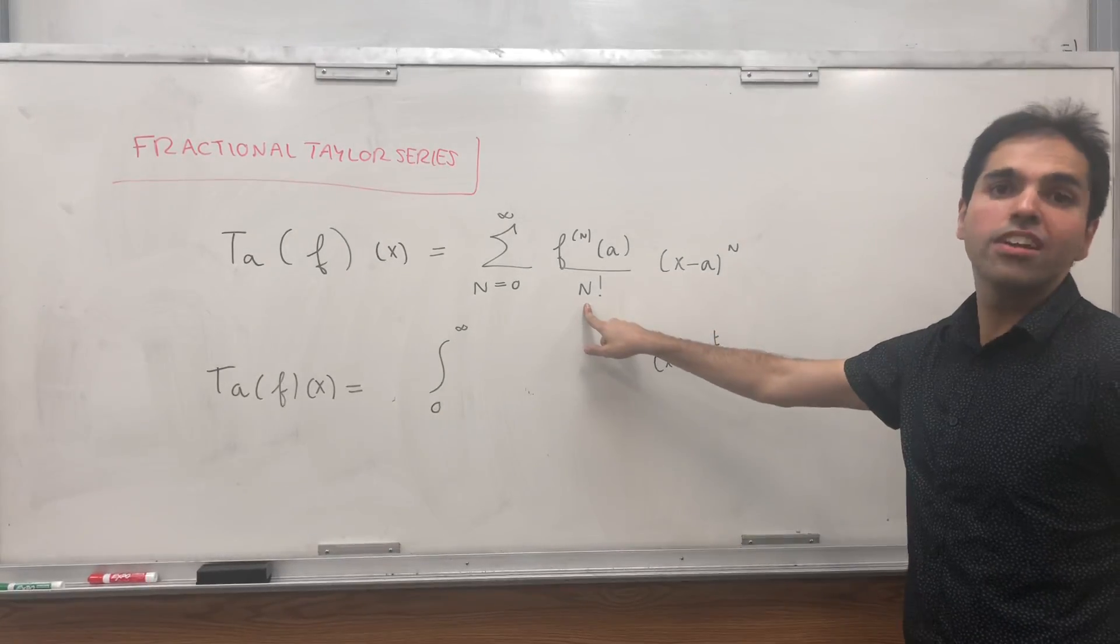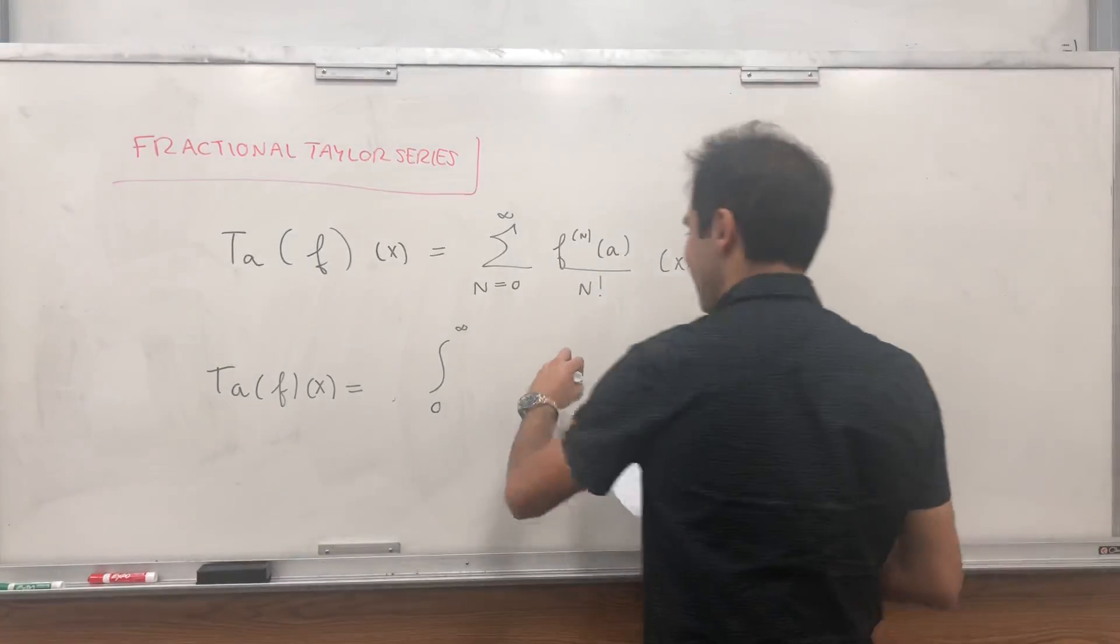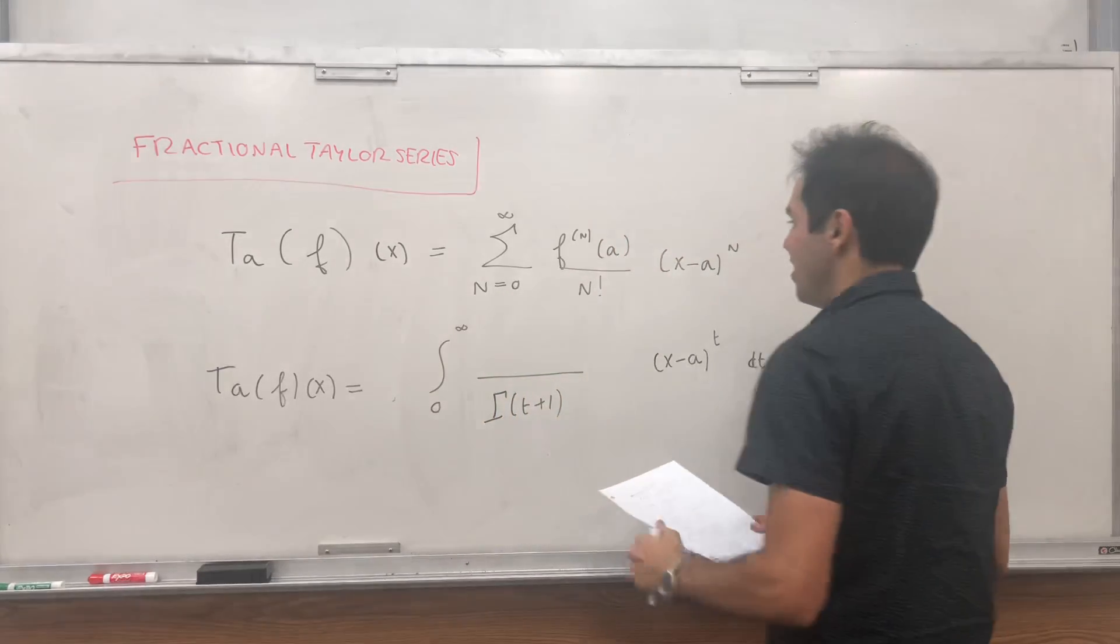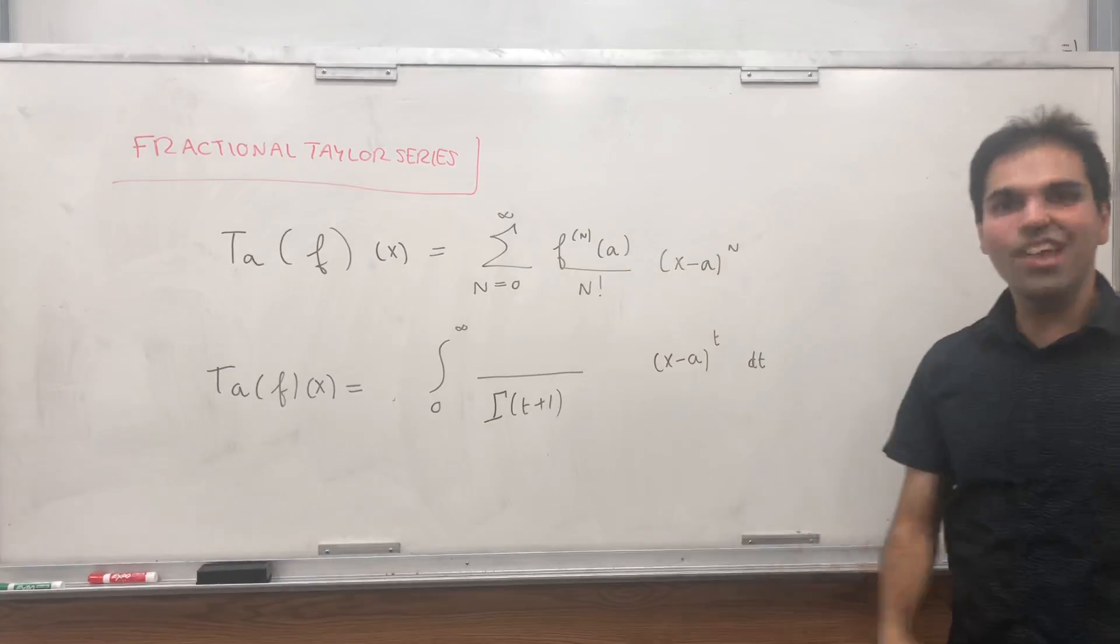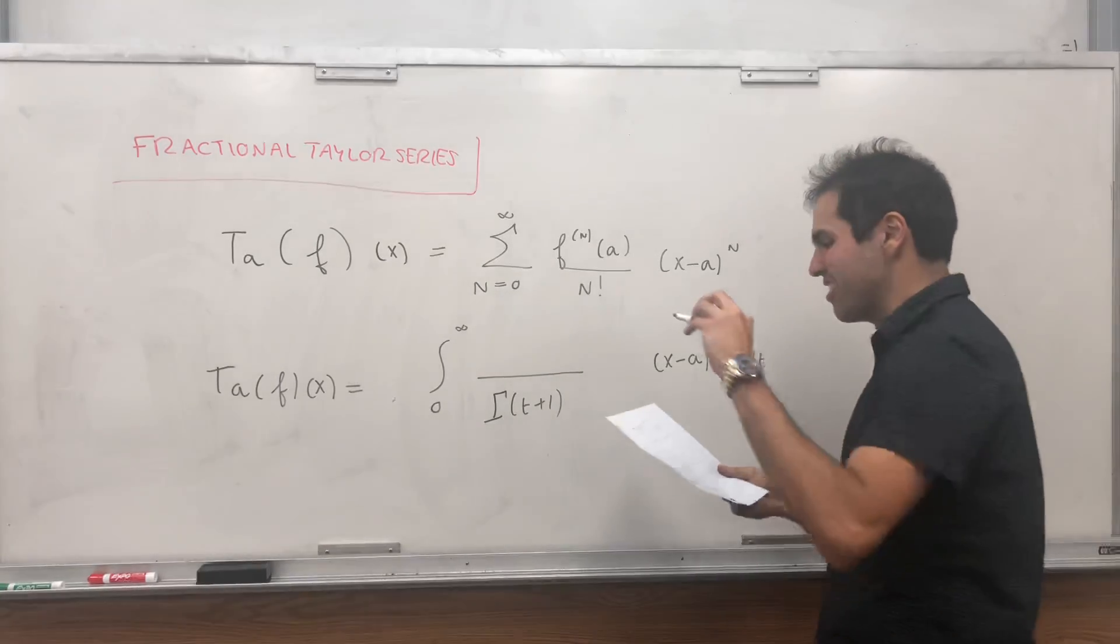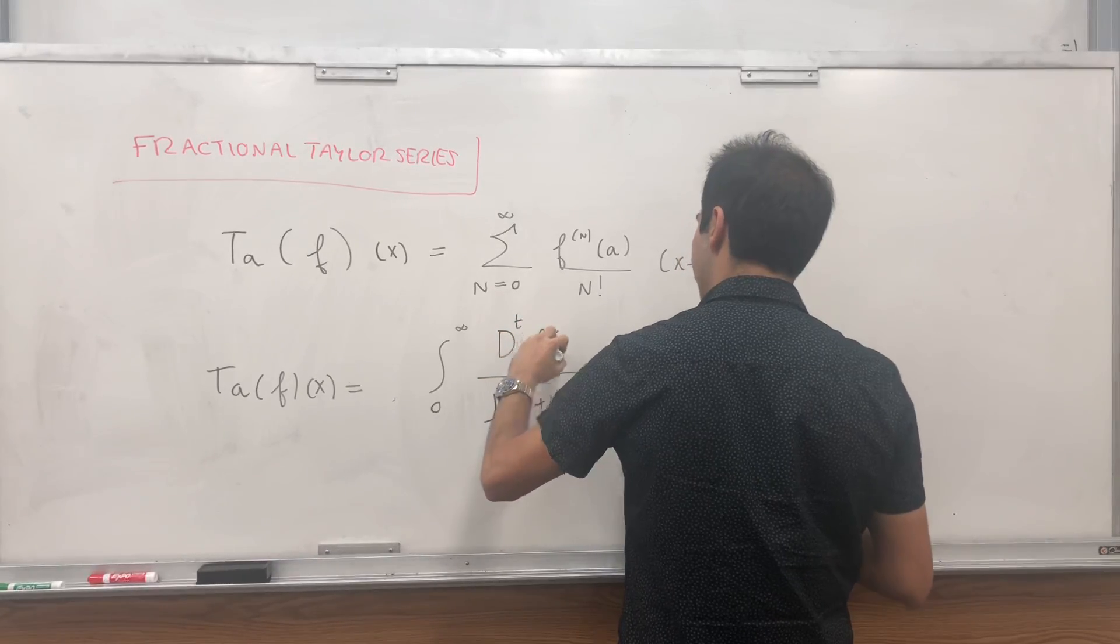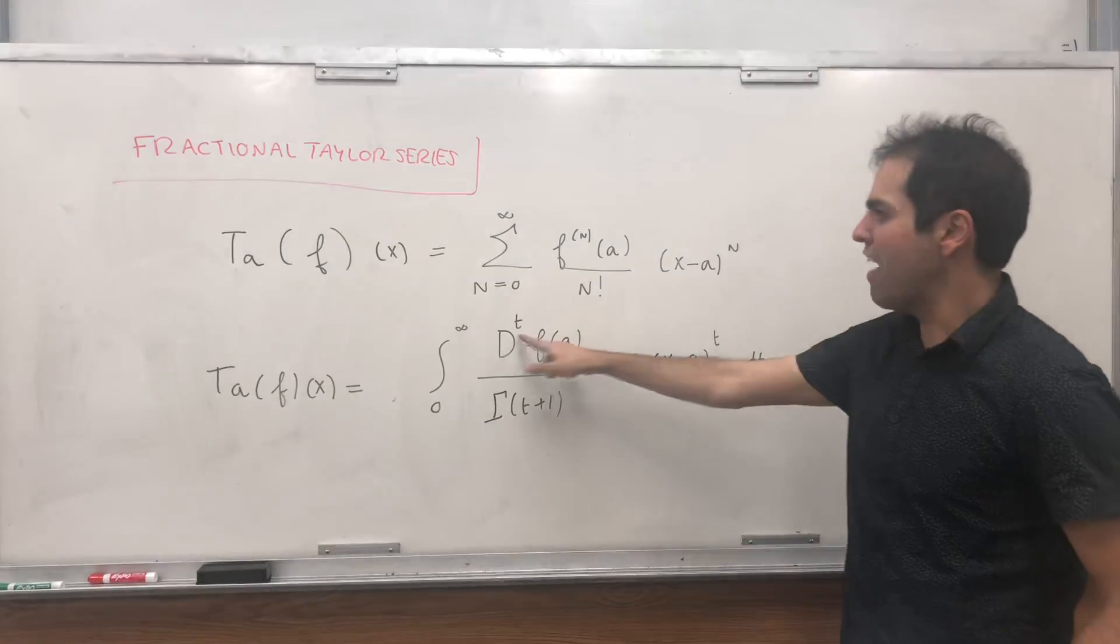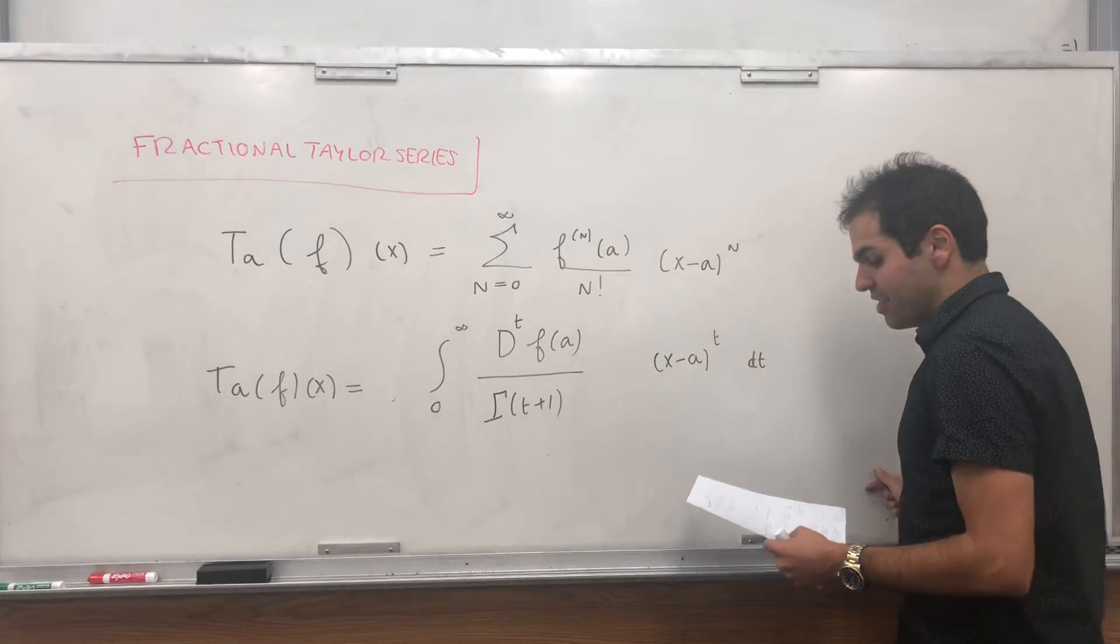And now, well, we would like to have a continuous analog of the factorial. And a very good analog is the gamma function, or if you want the pi function, it also works. Let's say gamma of t plus 1. And the last question is, so far we only had integer derivatives. If only we had continuous derivatives. But this is what fractional derivatives are good for. So you can just replace it with the tth derivative of f at a. And they're valid for any t, not just fractions, but also real numbers.